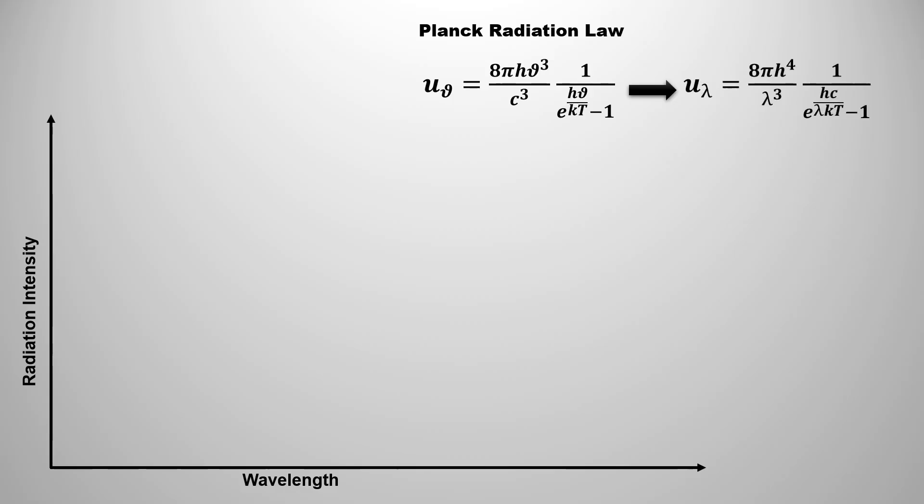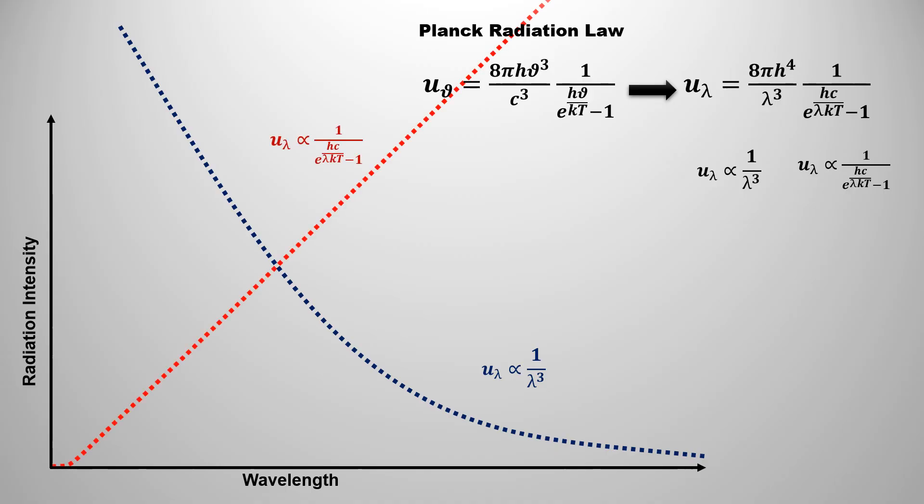Now let's draw the Planck radiation law on the graph. This equation consists of two terms of the wavelength, one by lambda to the power 5 and exponential term of the wavelength. First of all, let's draw the graph of the 1 by lambda to the power 5, then we get a curve of the decreasing nature. While the graph of the exponential term of the wavelength gives increasing curve. Both graphs are drawn at the constant temperature.